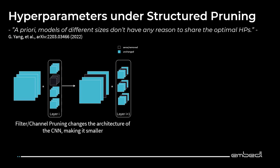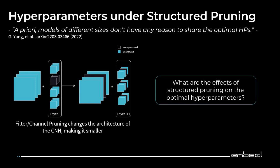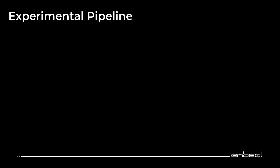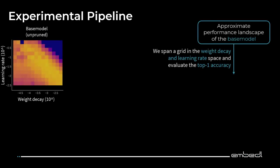Now let's look further into our actual research question. Since we do structured pruning, which actually changes the architecture of the network, we are interested in how the optimal hyperparameters change after pruning. Let's look first at our experimental pipeline. We start with a base model. In total, we are looking at ResNet-56 and MobileNet-V2 on CIFAR-10, and also some ImageNet results with ResNet-50. We are especially looking at weight decay and learning rate, and to get an initial idea of how the performance landscape looks after pruning, we span a grid in that space, looking at top-1 accuracy.